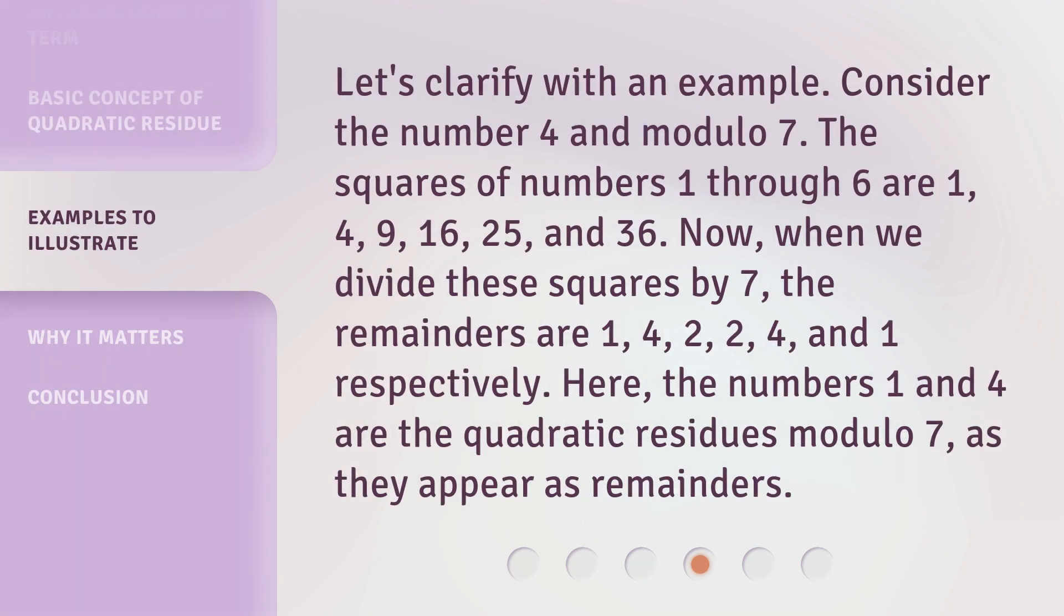Let's clarify with an example. Consider the number 4 and modulo 7. The squares of numbers 1 through 6 are 1, 4, 9, 16, 25, and 36.